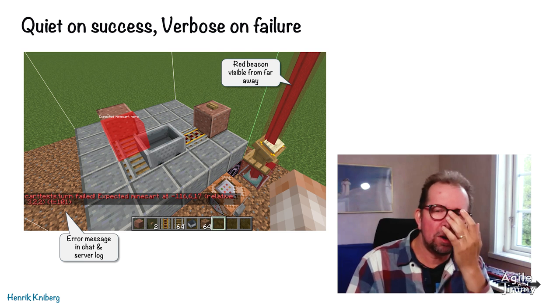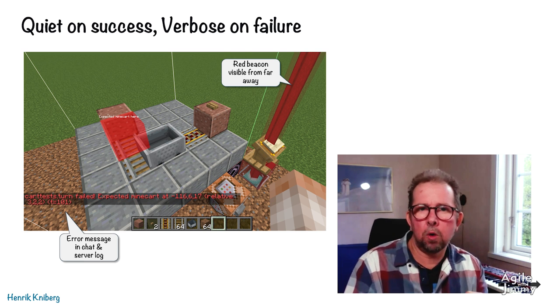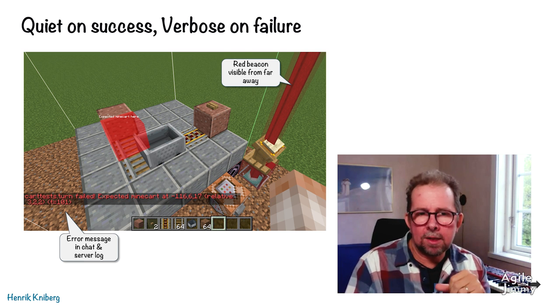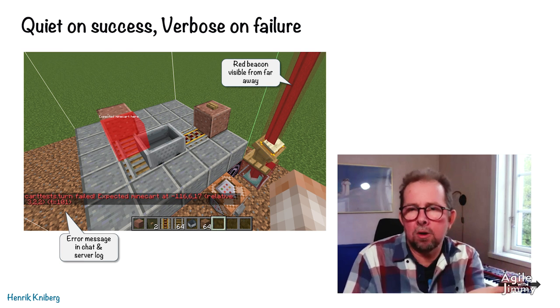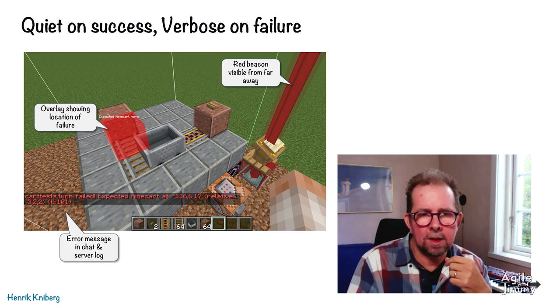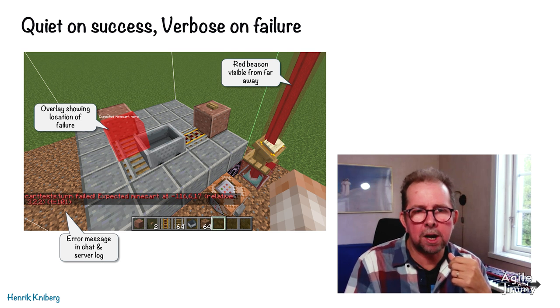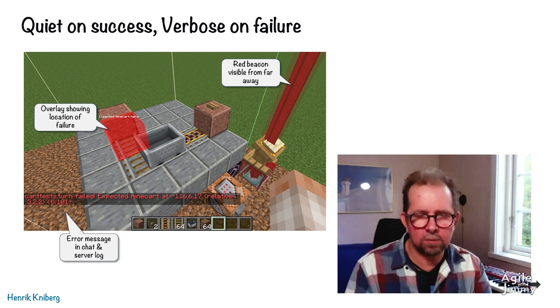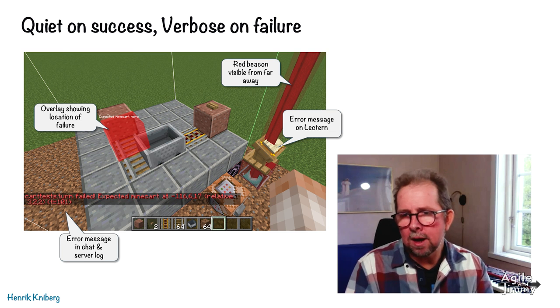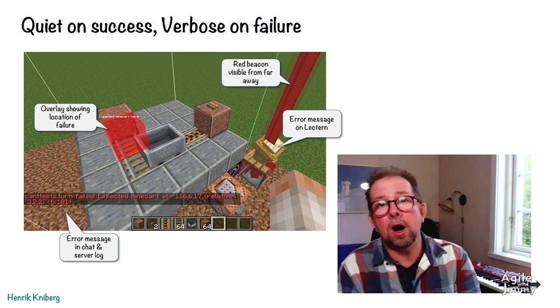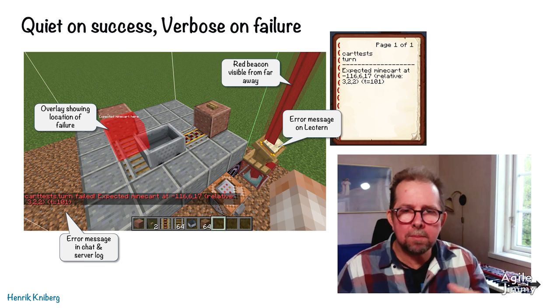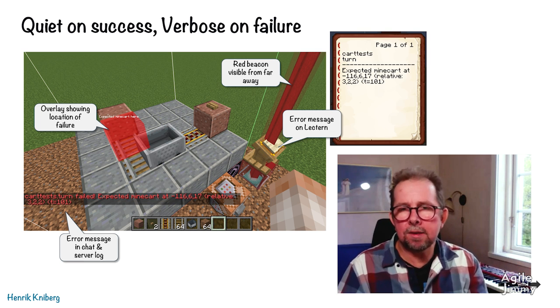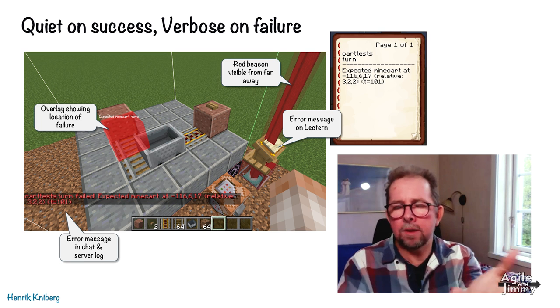And as I mentioned, we want tests to be quiet and successful and very noisy when failed. So in this case, I get error messages all over the place. The beacon, of course, to show me that there is an error over here. And when I go close, I can see an overlay showing the location of the failure. The minecart should have been over there, and it's not. That's wrong. And even there's a lectern over here with a book on it. And you can click on the book, and it'll tell you details. So we kind of use the Minecraft world itself. And that's nice because then you can save the world, look at it later, and most of this information is still there.